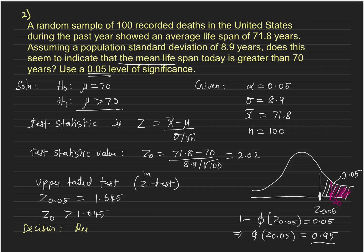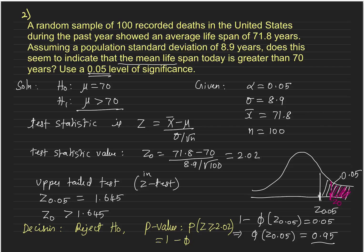The decision is: we reject H0. We can confirm this by finding the p-value. The p-value is the probability that z is greater than or equal to 2.02, which equals 1 minus phi of 2.02, approximately 0.0217. This is significantly less than 0.05, so we reject the null hypothesis — confirmed by the p-value.